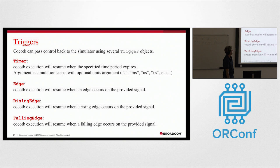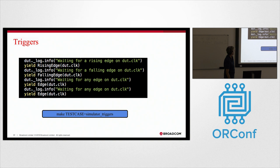So what other triggers can you yield on? Timer I've shown you, you can do edge, rising edge, falling edge - pretty standard HDL stuff here. And this is how you do each of those.